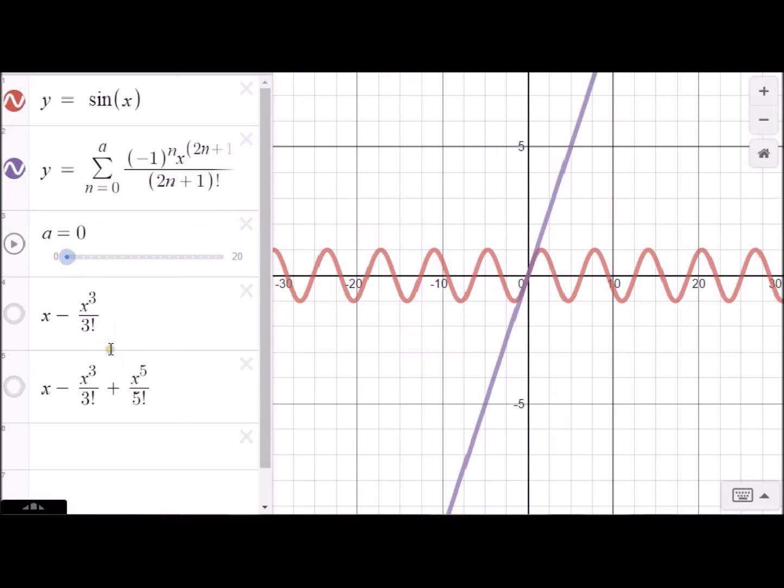So let's see, there's y equals x, and there's y equals x. There's x minus x to the third over three factorial. Notice as we include more and more terms, our approximating polynomial, which is the one in purple, it's staying closer and closer to the correct graph.